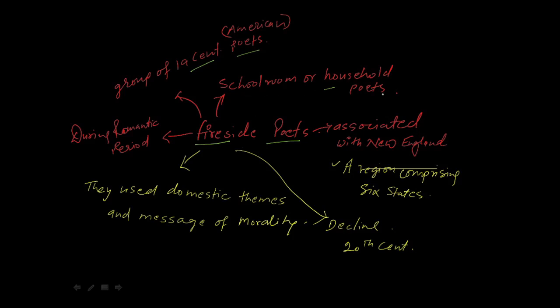Fireside Poets were also called schoolroom poets or household poets, and they were associated with New England, a region comprising six states. This movement or school was writing and composing their poems during the Romantic period. They used domestic themes and messages of morality, and the decline of this group of school saw in the 20th century.